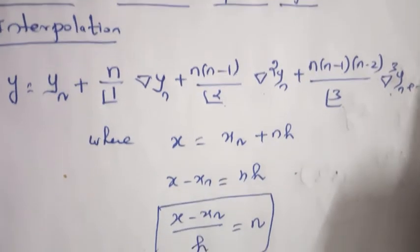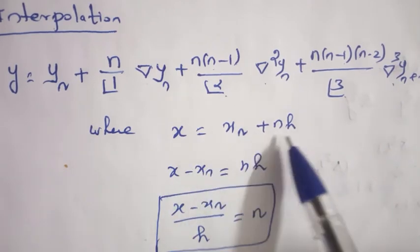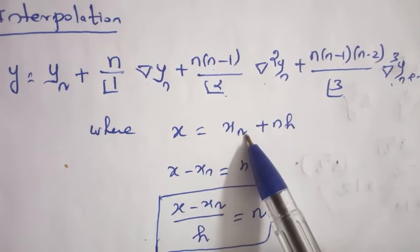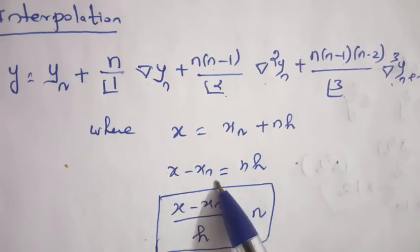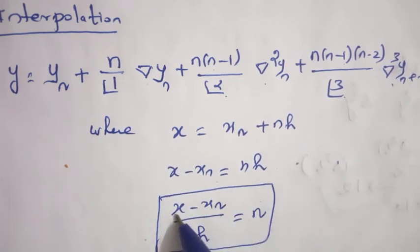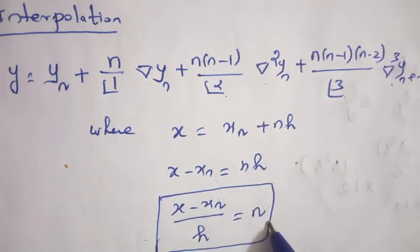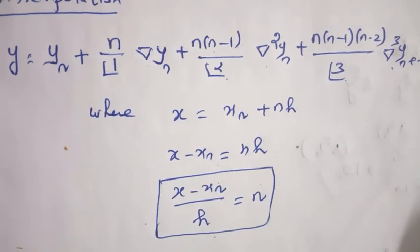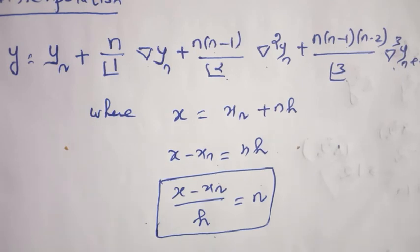Where X equal to XN plus N H, X minus XN can be taken in left hand side, X minus XN equal to N H. So, X minus XN by H equal to N. This is the Newton backward formula for interpolation.